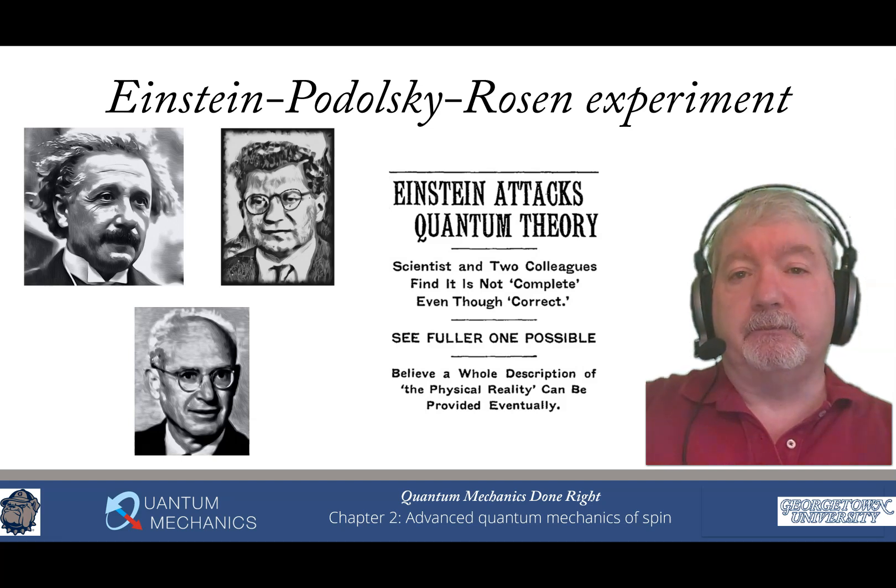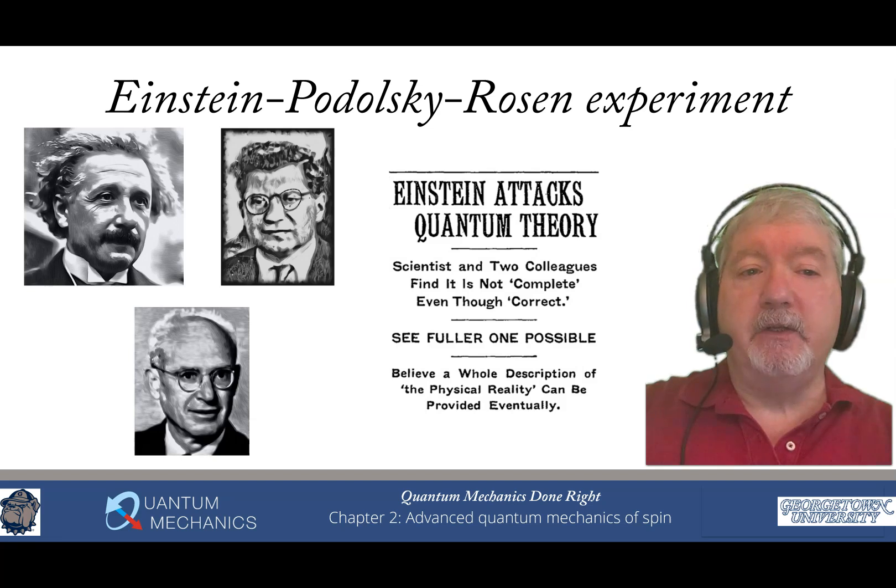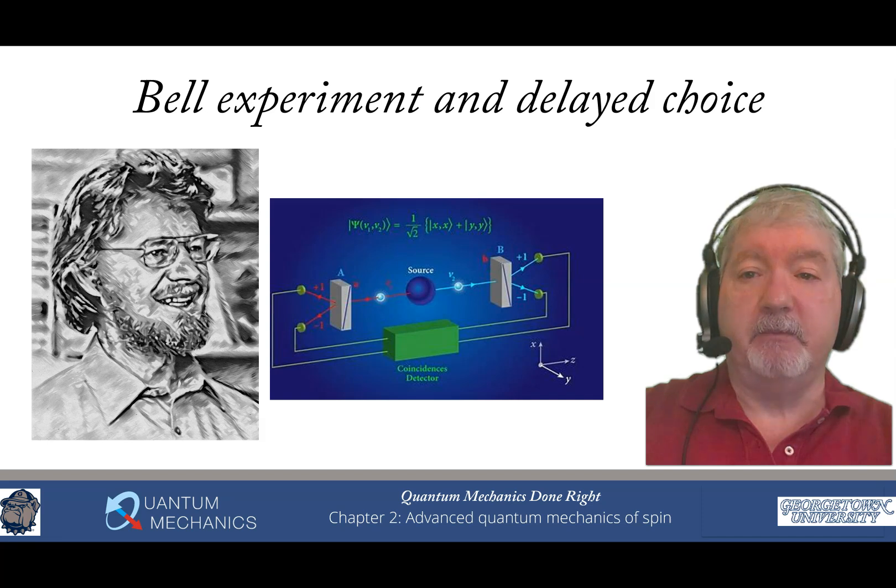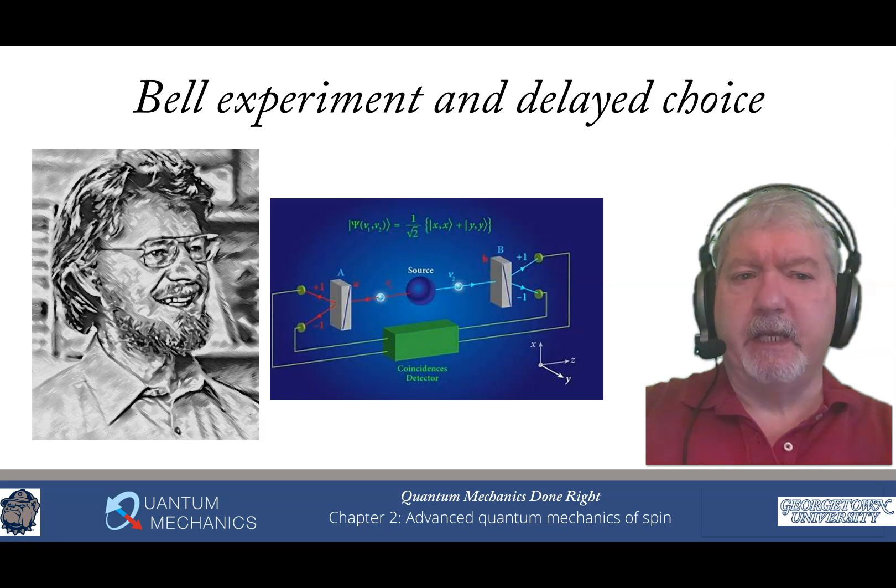There was a proof by von Neumann in his book that essentially said hidden variables can't occur. They can't be used in quantum mechanics. That proof had an error in it. But John Bell came up with arguments to test the ideas of the Einstein-Podolsky-Rosen experiment, and these have been tested since the early 1980s. The Bell experiments have completely verified that quantum mechanics behaves in this particular fashion.